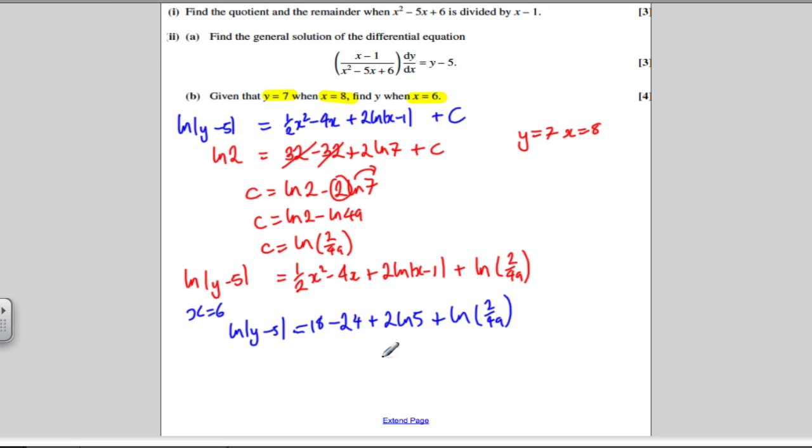Okay, best thing to do here is actually work out the right-hand side. So in our calculator, we get 18 subtract 24 plus 2 ln 5 plus ln of 2 over 49.